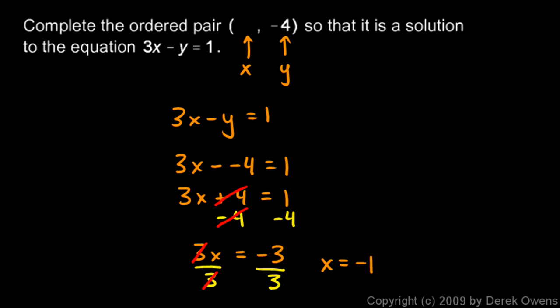So that's my answer. The ordered pair, then, would be written with a negative 1 right there for x. The ordered pair would be negative 1, negative 4.